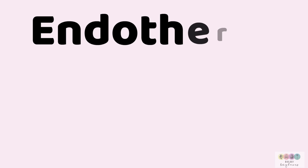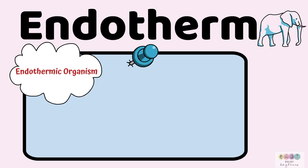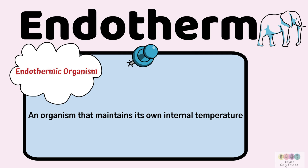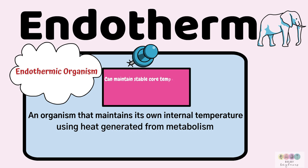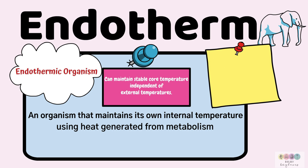Endotherms are endothermic organisms. They can maintain their own internal temperature and they do so by using the heat generated from their metabolism, from their metabolic reactions. Endotherms can maintain stable core temperatures independent of external temperatures. It doesn't matter if it's hot or cold outside — endotherms can regulate their own temperature and keep it pretty much constant.